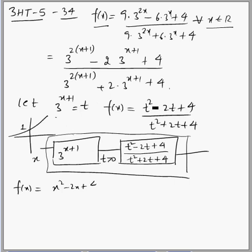we break this as a composite function, where x goes to 3 to the power x plus 1 first, and output of 3 to the power x plus 1 goes to this block, rational function of x. And now you know exponential function can take only positive values.